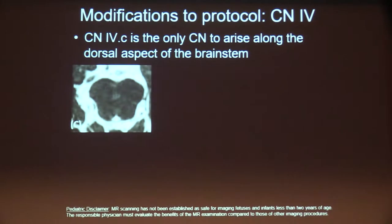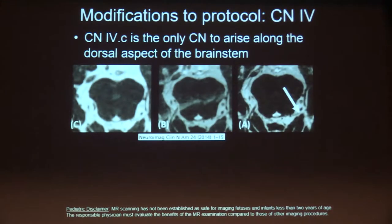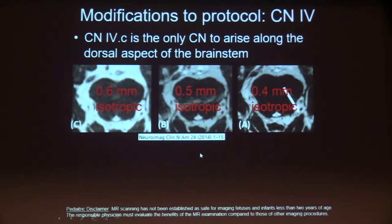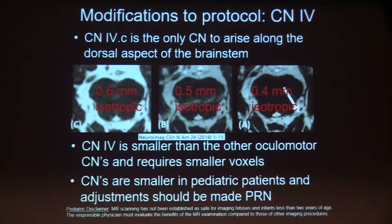Sometimes we do modify the protocol. The fourth cranial nerve is one of the smallest in diameter. In this patient imaged for trochlear nerve palsy, at 0.6 mm isotropic CISS imaging without contrast I wasn't able to see the nerve well — in fact, often what we think we see on standard imaging can be adjacent veins in this region. It was only at 0.4 mm isotropic that you can begin to see with confidence the trochlear nerve extending through the cistern.